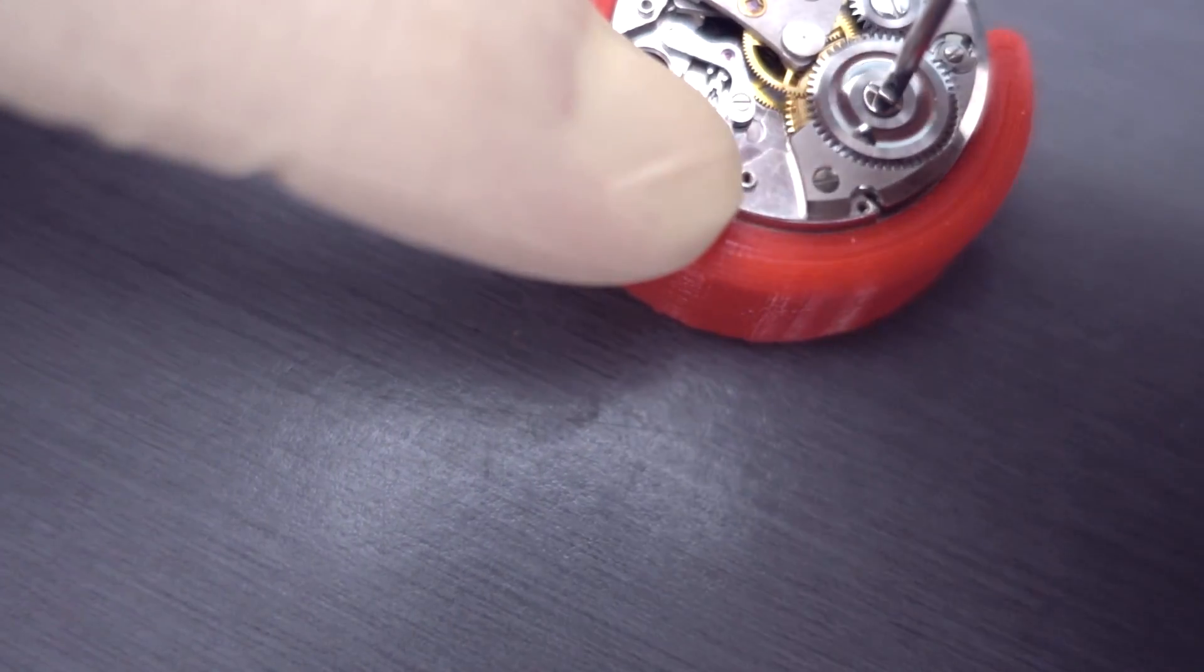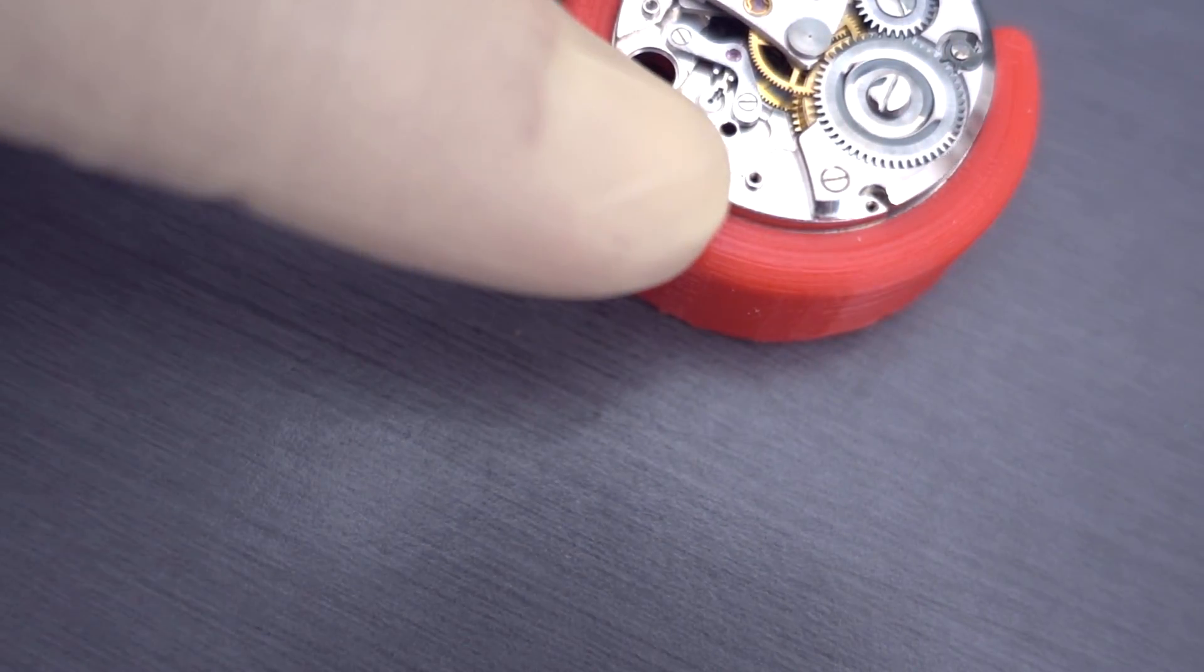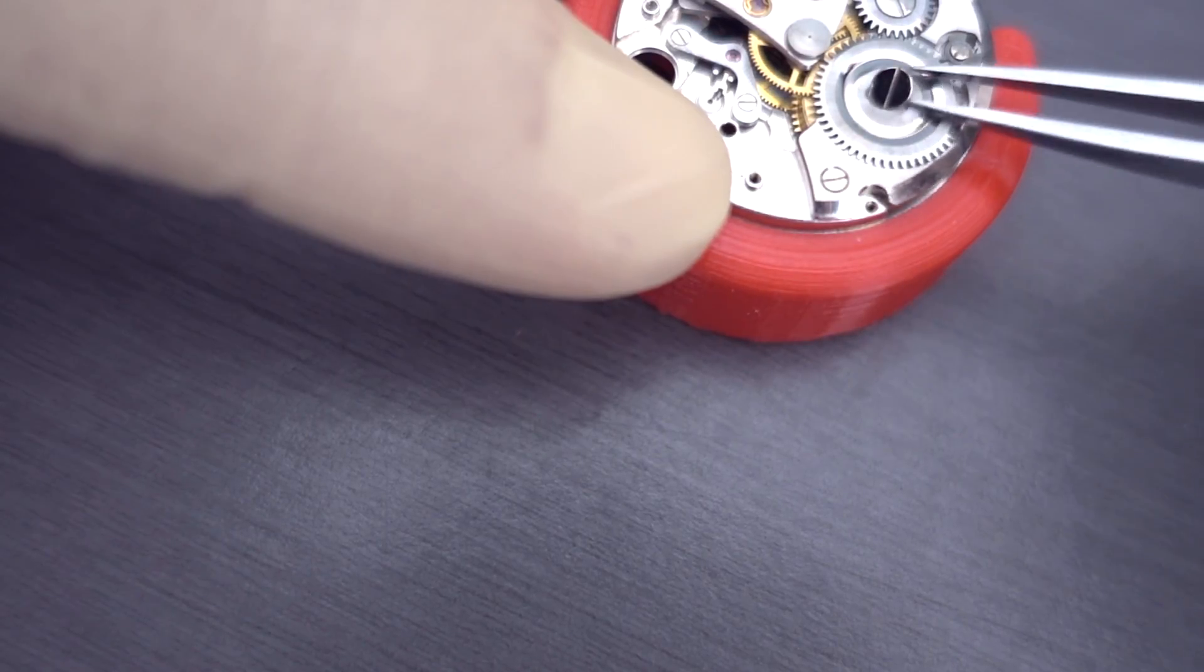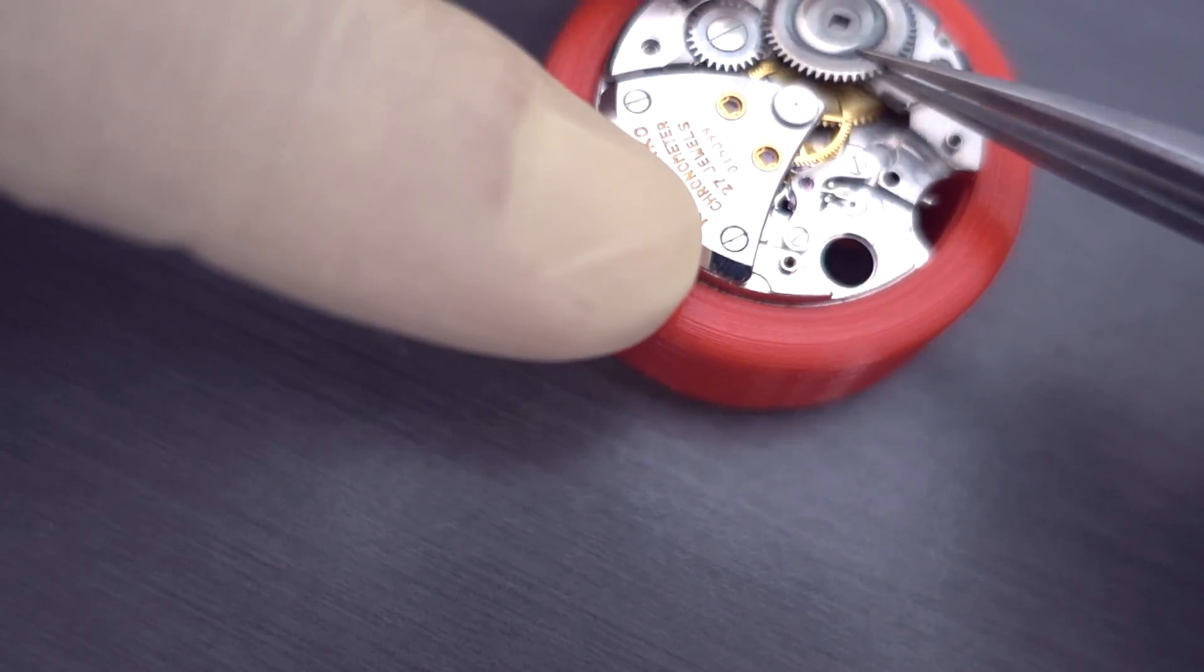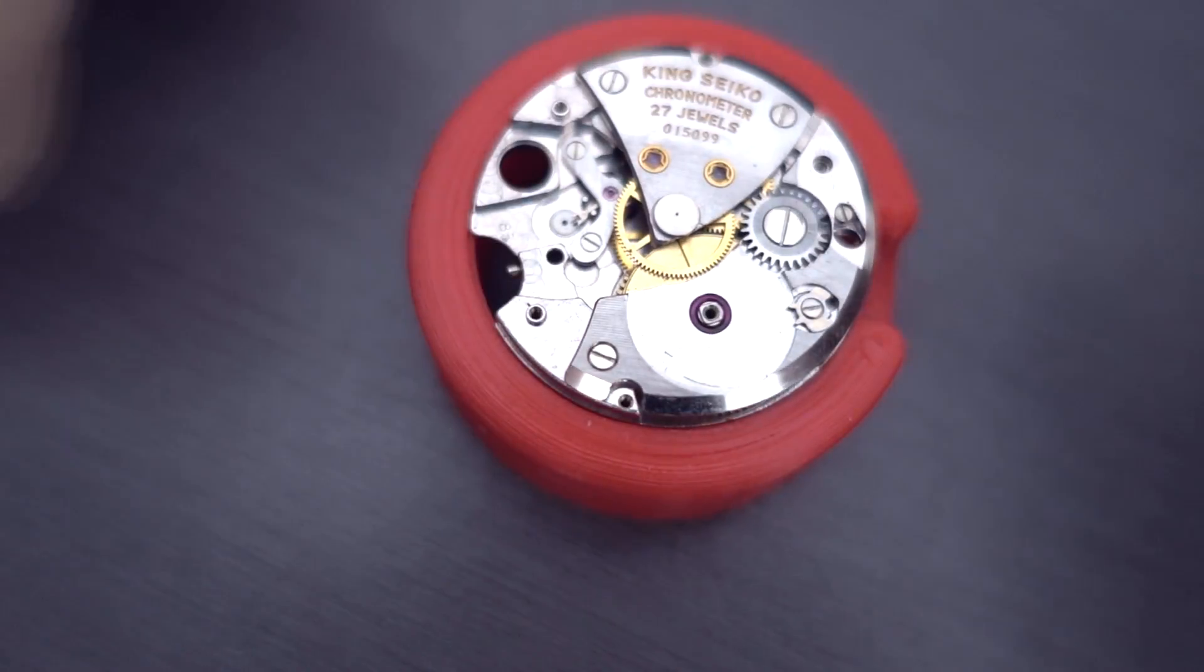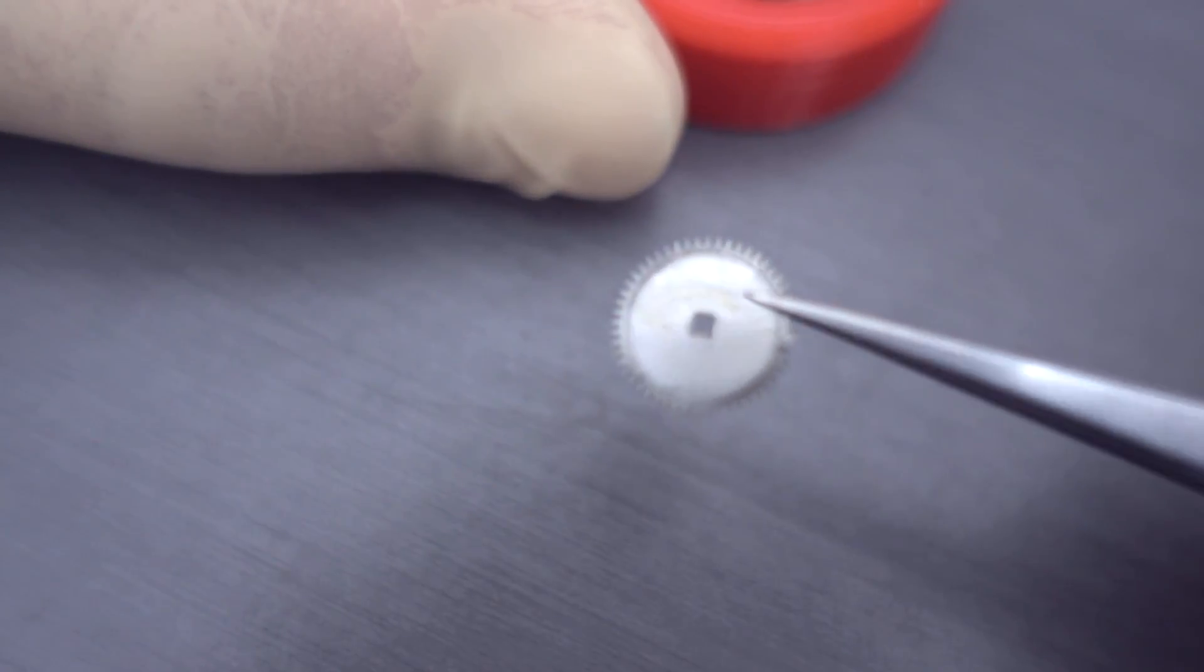And just getting a shot there of the highly polished surfaces. Just removing the ratchet wheel there. And these ones have a fairly traditional style setup. So it's the same sort of thing that you'd see on a Swiss movement.